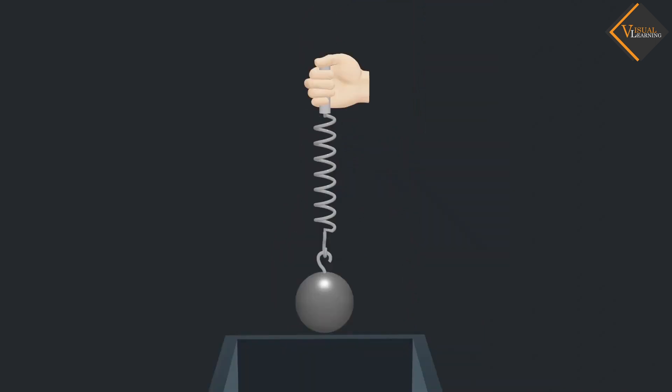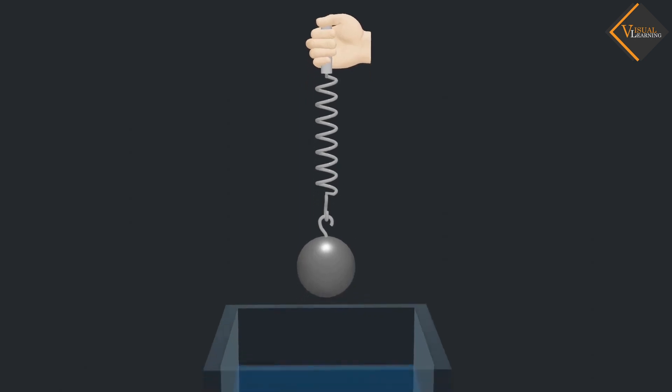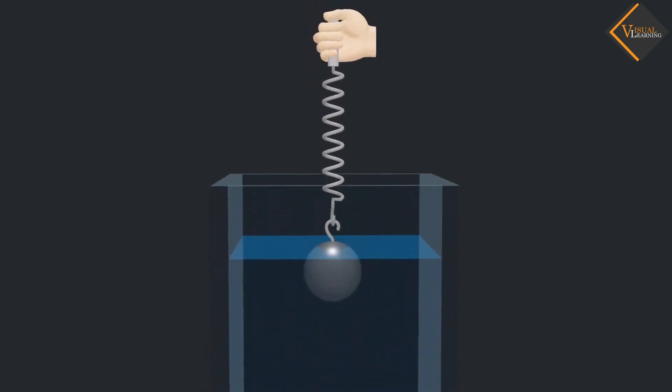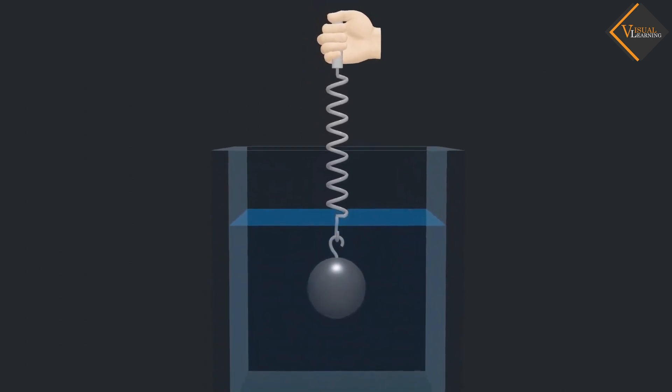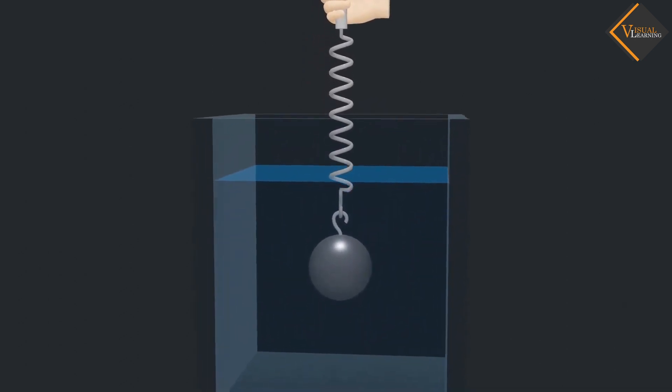Now, along with the spring attached, immerse the iron ball into the water. The iron ball displaces some water.